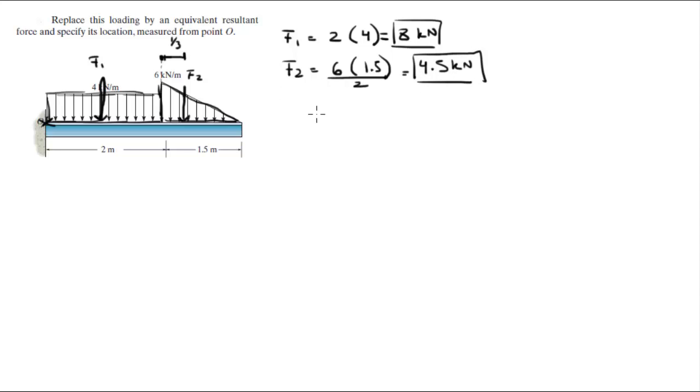Both forces are aiming down, so let's assume downwards positive, so the resultant force is equal to F1 plus F2, which will be 12.5 kilonewtons.